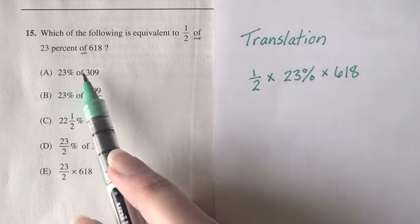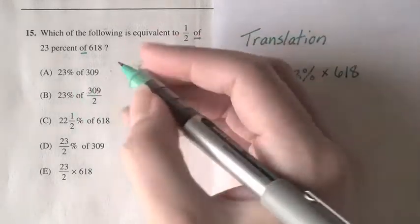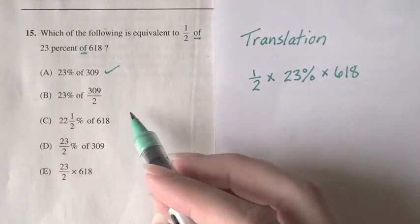We've just turned that multiplication sign back into 'of'. So A looks really good, but let's investigate the other options.